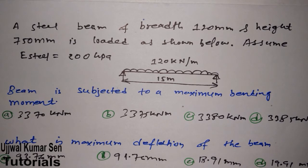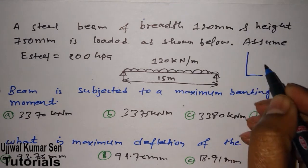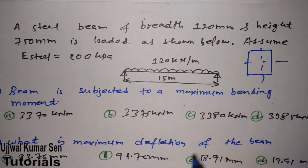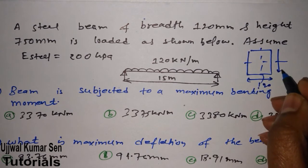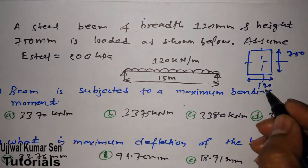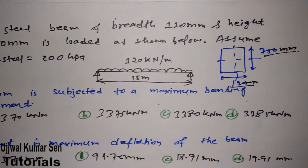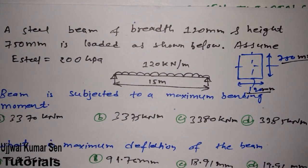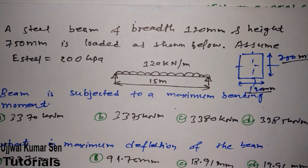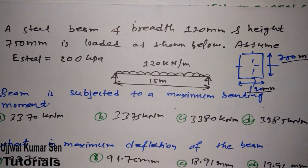Let's go to the question. A steel beam has a breadth of 120 mm and a height of 750 mm — given in millimeters. From the problem, we can identify this as a simply supported beam subjected to a uniformly distributed load of 120 kilonewtons per meter, with a total beam length of 15 meters.